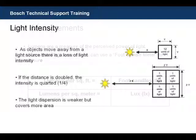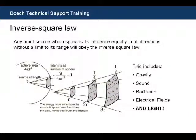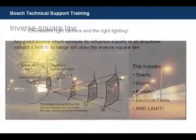Next, we want to talk about light intensity. This is another overlooked topic, especially when we're dealing with IR lighting. As objects move away from a light source, there is a loss of light intensity. If the distance of an object from the light source is doubled, the intensity of the light is quartered. This is known as the inverse square law of light and should be taken into consideration when you're doing a CCTV installation.